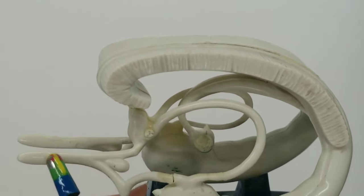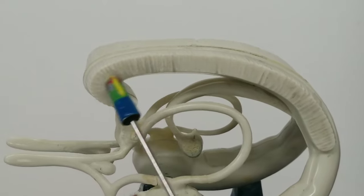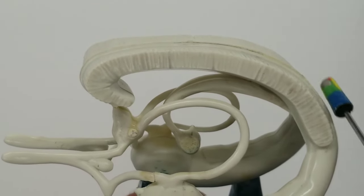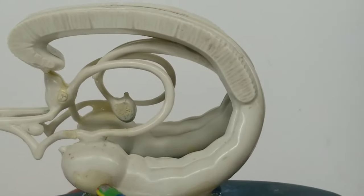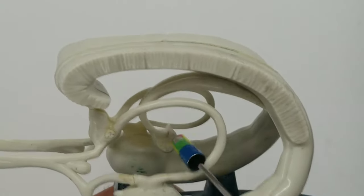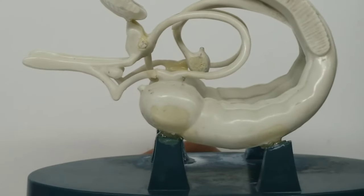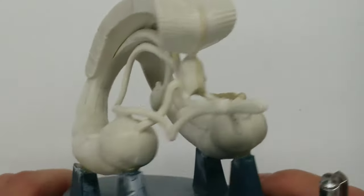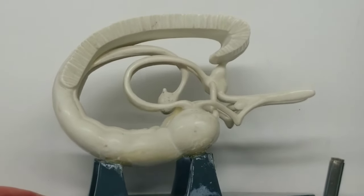So once again, we can see the olfactory bulbs, the corpus callosum. The cingulate gyrus would be around it. We can see the hippocampus, amygdala, fornix, and mammillary bodies. This is a model showing many structures of the limbic system.